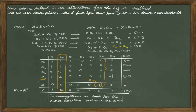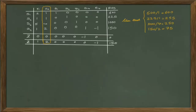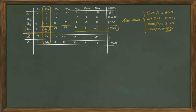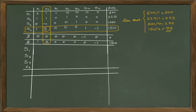To determine the exiting variable, we implement the minimum ratio test using only the positive values in the pivot column. All values are positive, so dividing the right-hand side by these values gives a minimum of 75, related to row 4. The intersection of the pivot column and pivot row gives a pivot value of 2. In the next table, A4 is replaced by x2. To change the pivot value 2 to 1, we divide the fourth row of the old table by 2.